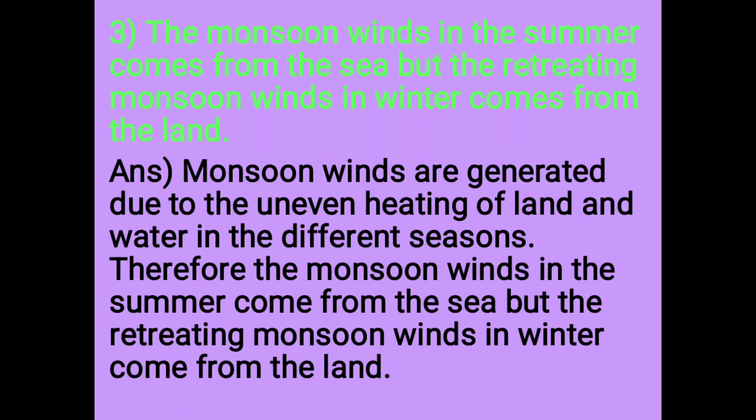The monsoon winds in the summer come from the sea, but the retreating monsoon winds in winter come from the land. Answer: Monsoon winds are generated due to the uneven heating of land and water in the different seasons. Therefore, the monsoon winds in the summer come from the sea, but the retreating monsoon winds in winter come from the land.